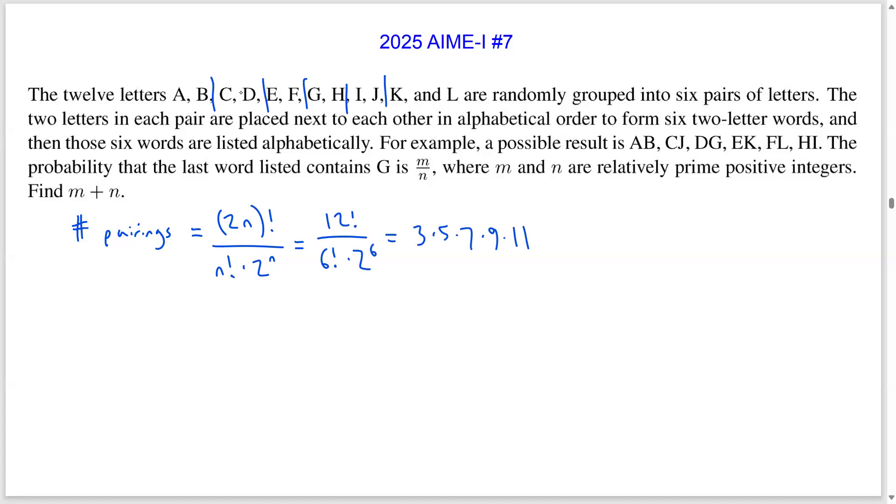Now, to find the number of pairings where G is in the last word, we're going to use a little bit of casework. So the first case is that the last word alphabetically contains some letter followed by G, where this first letter comes before G in the alphabet. The second case that we're going to consider is that the last word starts with the letter G.